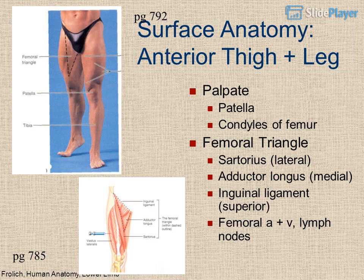Surface anatomy of the anterior thigh and leg — palpate: patella, condyles of femur, femoral triangle (sartorius laterally, adductor longus medially, inguinal ligament superiorly), femoral artery and vein, and lymph nodes (page 785).